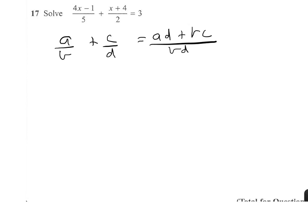So you'll see now that I do that in the way that I answer this question. So my ad will be 2 times 4x minus 1.